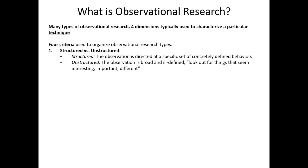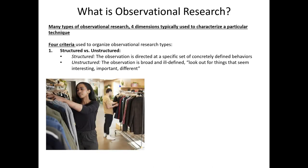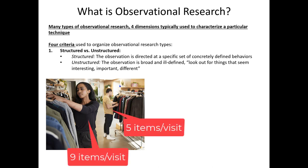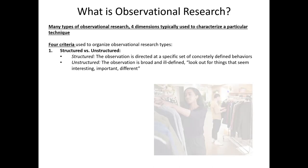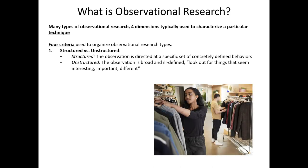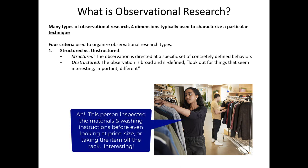First, observational research comes in structured and unstructured formats. When it's structured, the observation we intend to look at is clearly defined. For example, perhaps we're interested in the number of products that a consumer touches while shopping in a retail store — counting the exact number of products touched within a particular timeframe. On the other hand, a lot of observational research is unstructured. That is, we don't set any particular rules for what we're looking for. Instead, we're merely looking out for consumer behaviors that seem interesting, important, or different from our expectations. This tends to be associated with exploratory research designs.